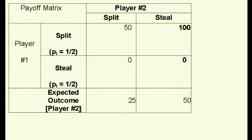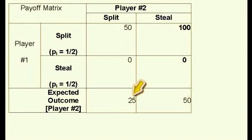The matrix at the bottom shows the symmetry of the problem — the same numbers apply for player number 2 as for player number 1, so we expect player number 2's expected outcomes to be the same when choosing the same options. Player number 2 will have an expected payout from choosing split equal to 25 — that is one half of 50 plus one half of 0 — and an expected payout of 50 when choosing steal, which is one half of 100 plus one half of 0.